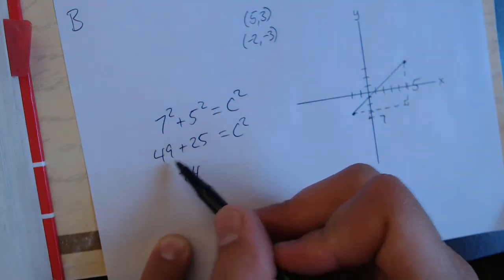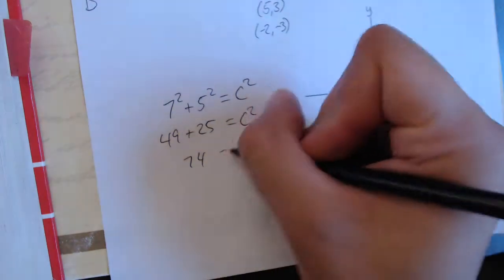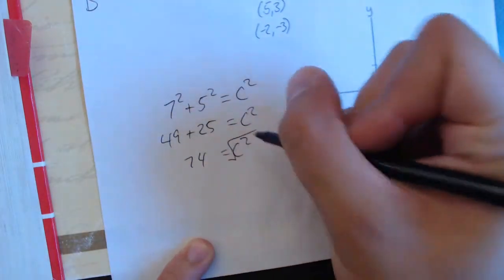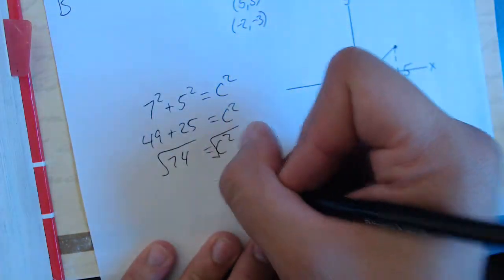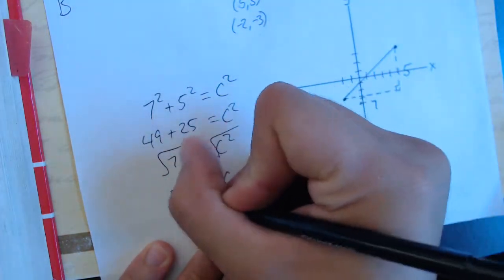Is that right? 4, 60, 14, yeah, 74. So 74 equals C squared. Find the square root. So the answer is going to be square root of 74.